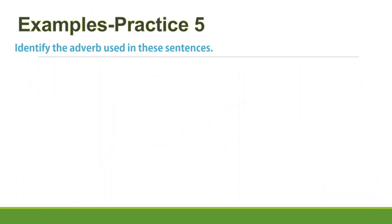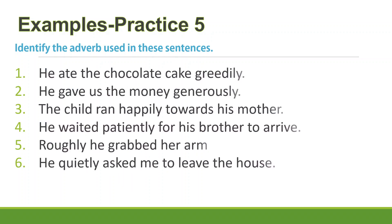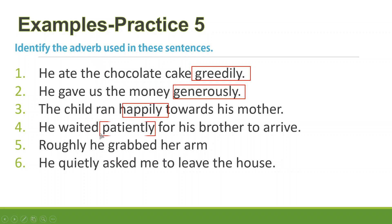For the final practice, identify the adverb in each sentence. Number one: 'He ate the chocolate cake greedily' — greedily. Number two: 'He gave us the money generously' — generously. Number three: 'The child ran happily towards his mother' — happily. Number four: 'He waited patiently for his brother to arrive' — patiently. Number five: 'He grabbed her arm roughly' — roughly. Number six: 'He quietly asked me to leave the house' — quietly.